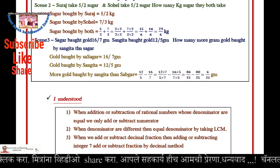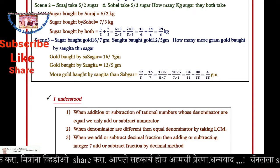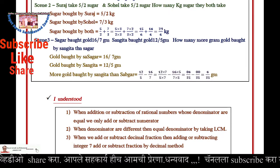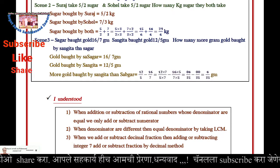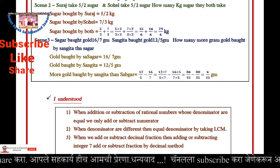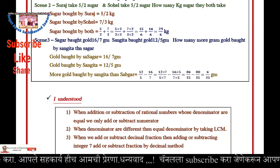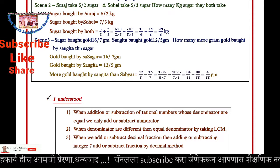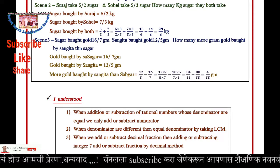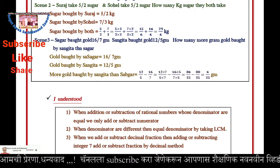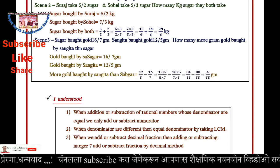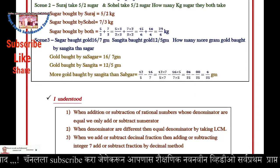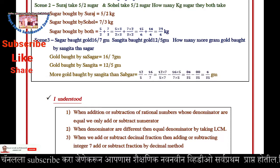Summary: When adding or subtracting rational numbers whose denominators are equal, we only add or subtract the numerators. When denominators are different, we make equal denominators by taking the LCM. When we add or subtract decimal fractions, we add or subtract the integer part and the fraction part using the decimal method.